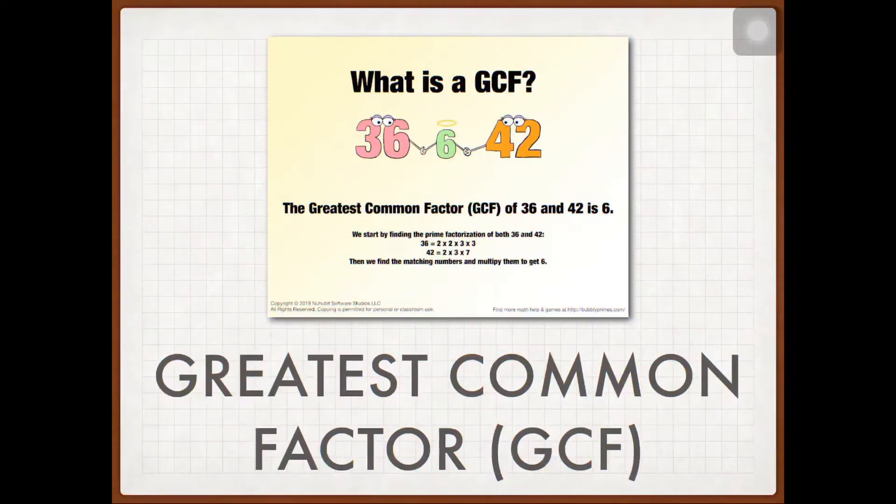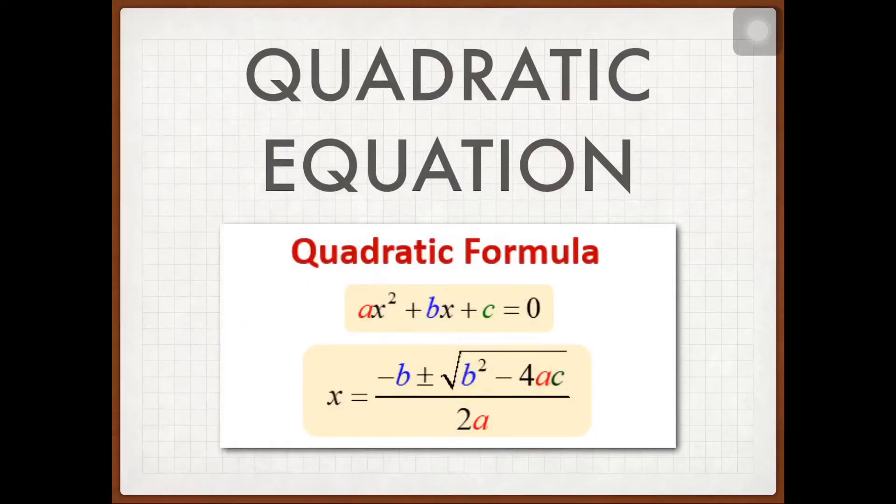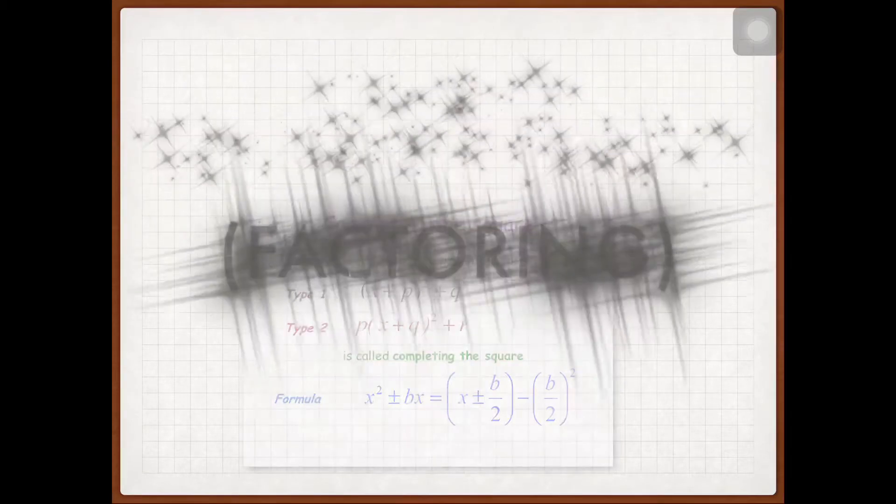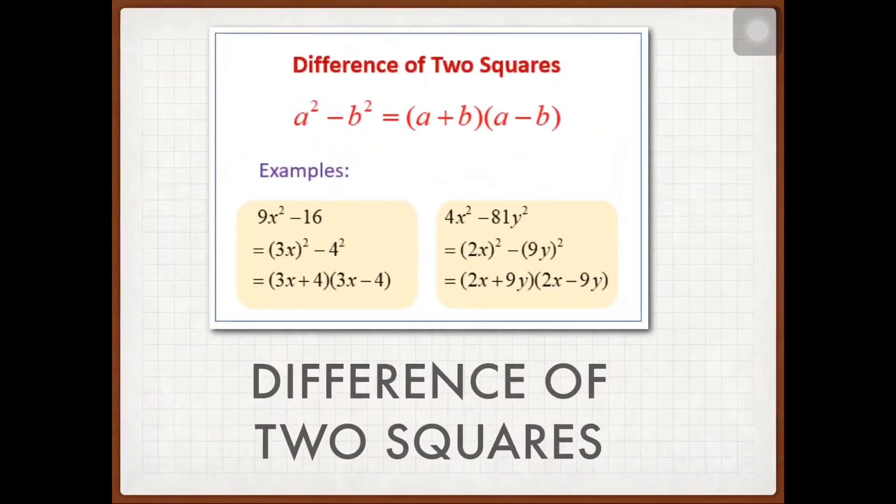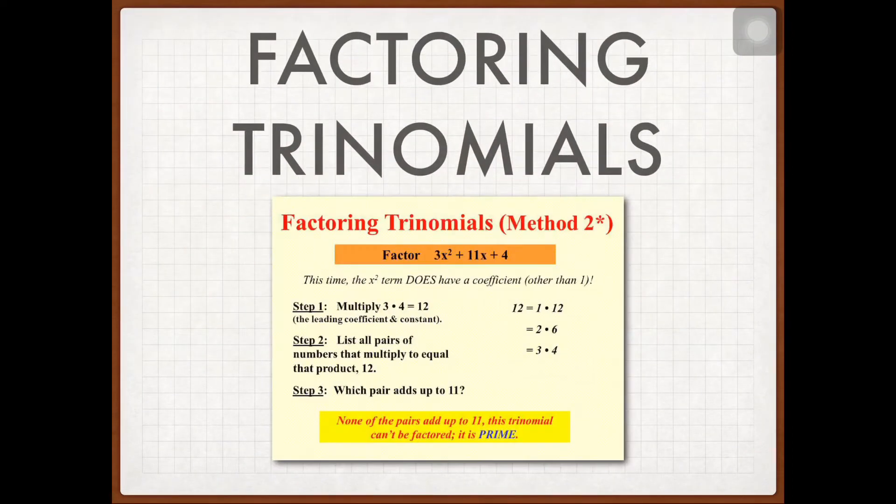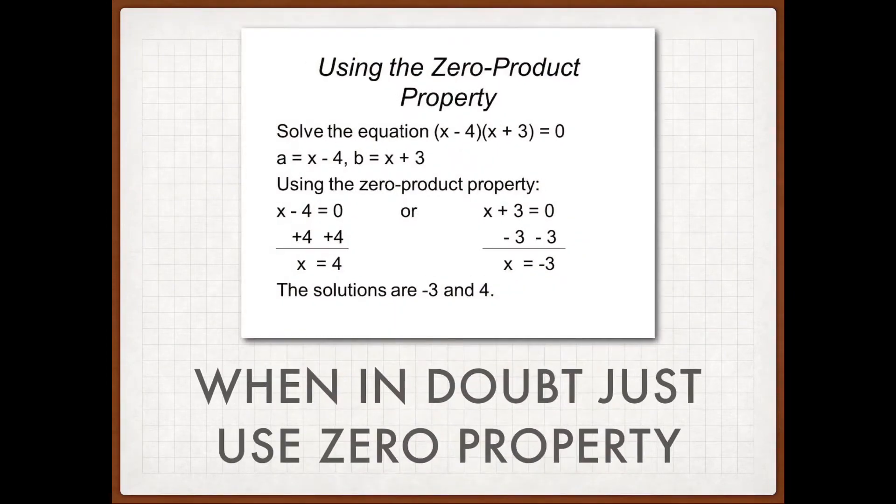Factoring, greatest common factor. Quadratic equation, sometimes just completes a square. Factoring difference of two squares. Factoring trinomials. In that just use zero property.